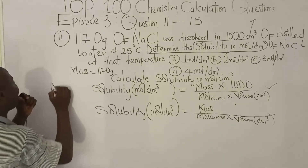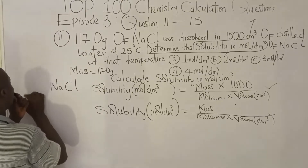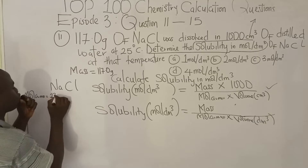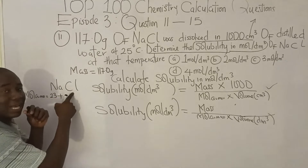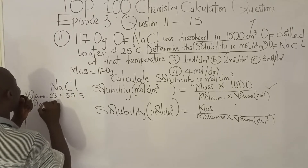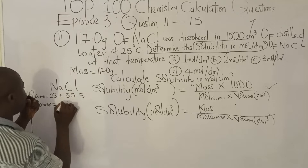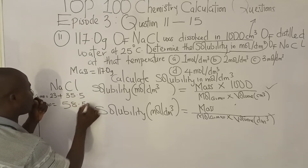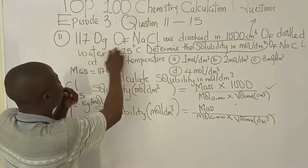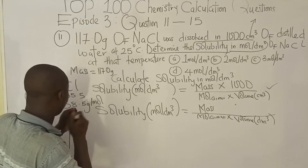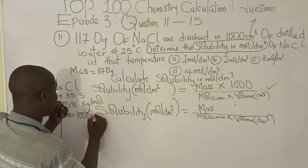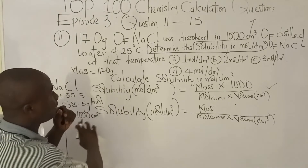The compound is NaCl. The atomic mass of sodium is 23, plus the atomic mass of chlorine, which is 35.5. So the molar mass is 58.5 grams per mole. The volume given in the question is 1000 cm³.